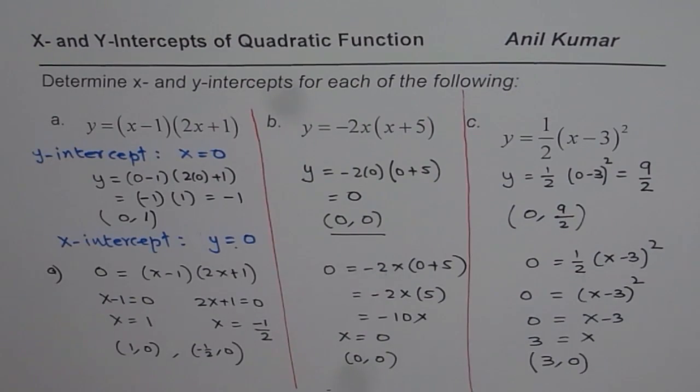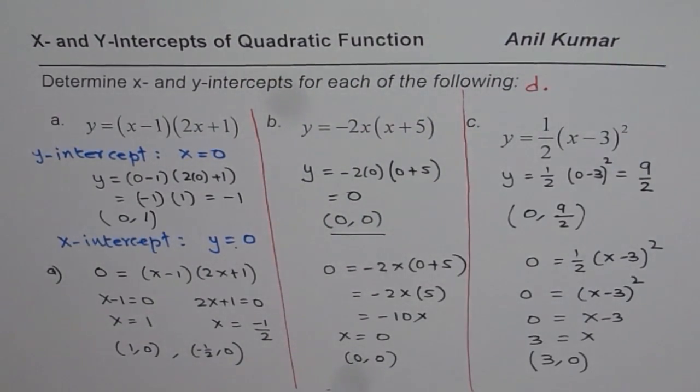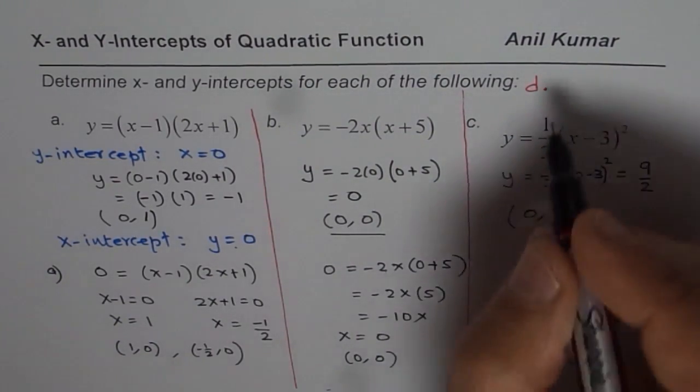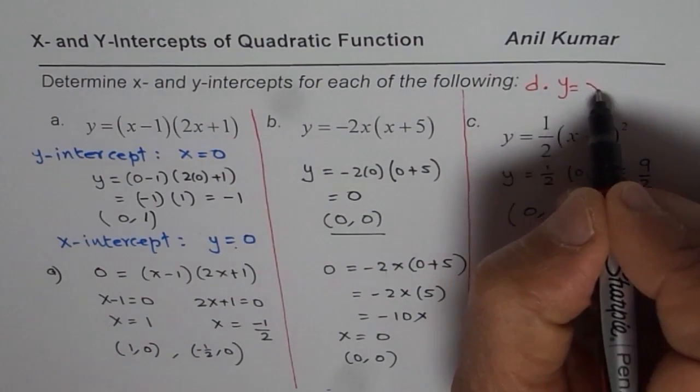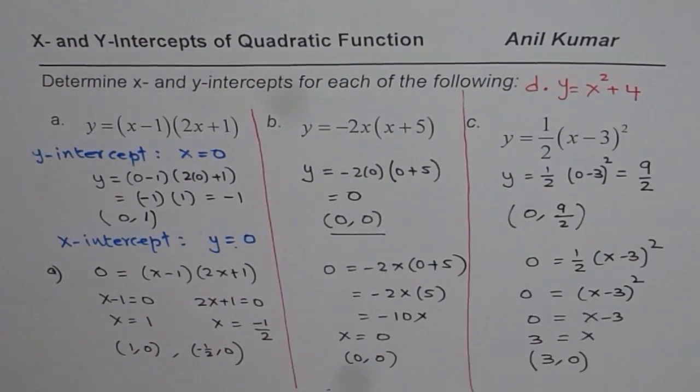Now for that case, let me give you a question to solve. Let me say that it's d. In this case, we do not have any x-intercept, but we will have y-intercept. The equation is y equals to, let us say, x squared plus 4. Can you solve this equation and find x and y-intercepts? Let that be your exercise.